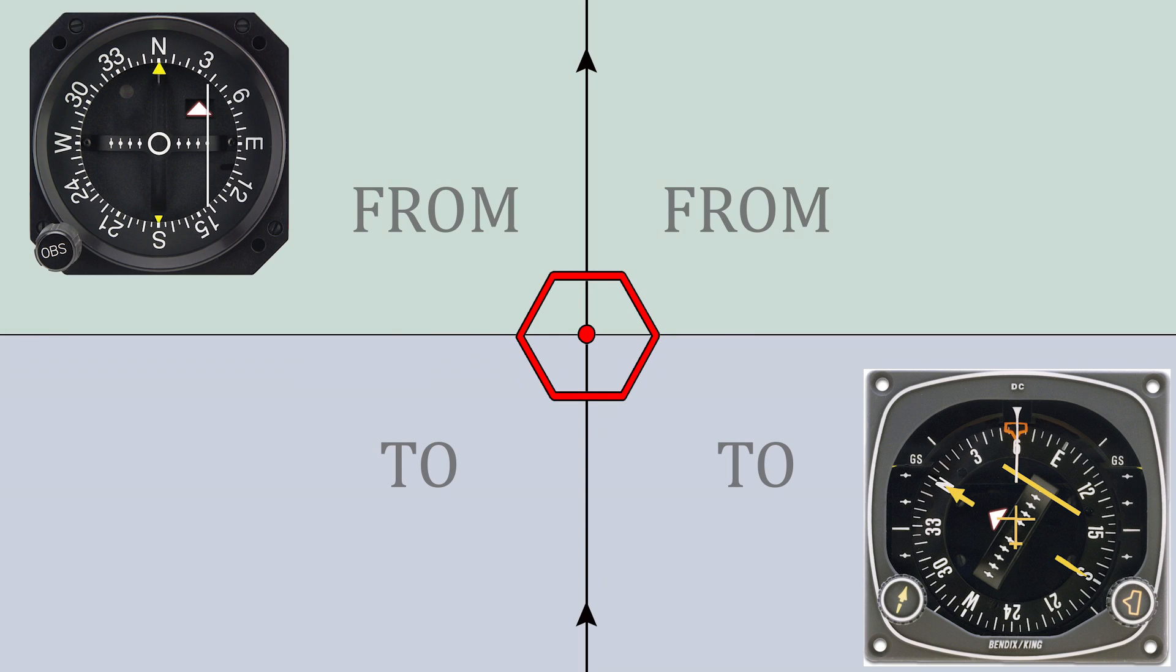When using VOR navigation, it's important to be aware of the to and from sectors that are separated at a 90 degree angle when compared to the selected course.